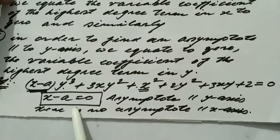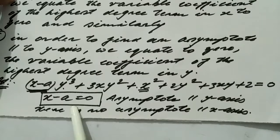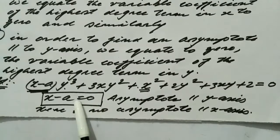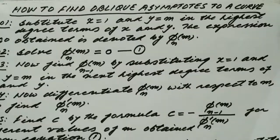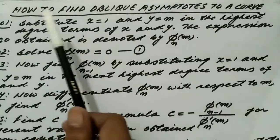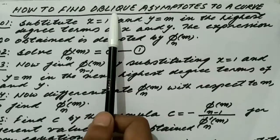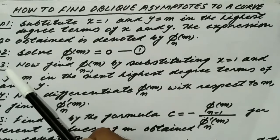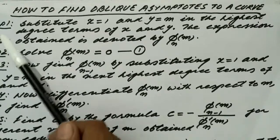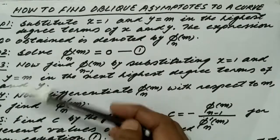This is how we find asymptotes of a curve parallel to the x-axis or parallel to the y-axis. In the next section we will discuss how to find oblique asymptotes to a curve, which is a slightly lengthier process.